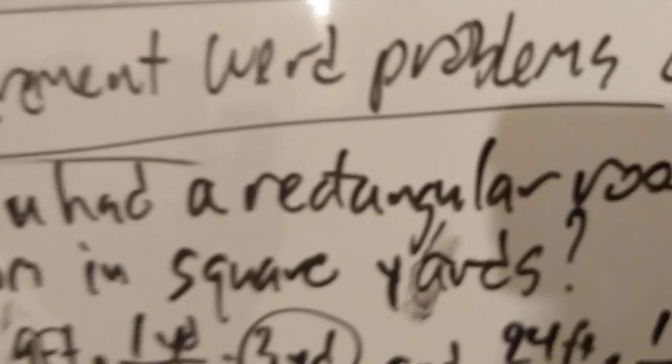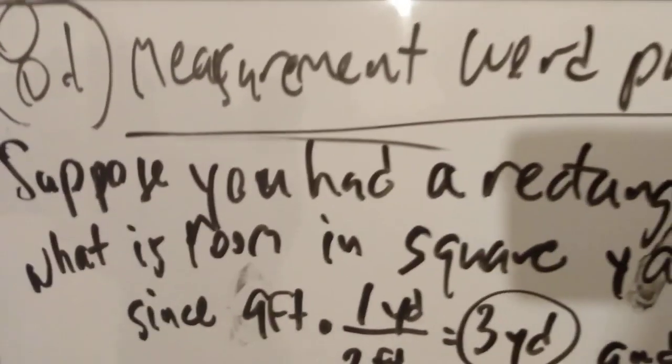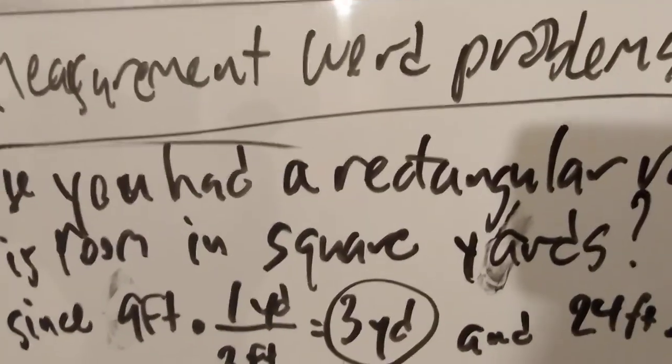All right, I got to get right to it. This is another part of measurement word problems. Suppose you had a rectangular room that was 9 feet by 24 feet wide. What is the room in square yards? Or what is the area? I mean square yards. Notice it said feet by feet, but we're looking for square yards.